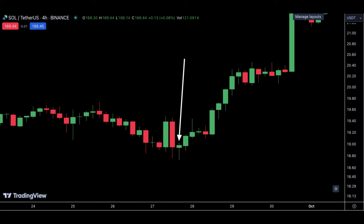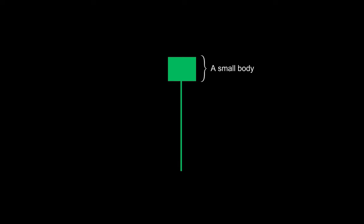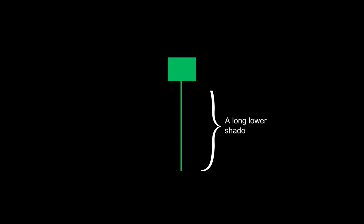The hammer candlestick is a strong reversal pattern that converts a downtrend to an uptrend. It is a candlestick with a small body, a long lower shadow, and little to no upper shadow. The hammer is formed when the price opens, sellers take control and drive the price down, but later buyers take control and drive the price back up to its closing price. Hammer candlesticks with a greater success rate have a small body, a long lower shadow that is at least twice the length of the body, and little to no upper shadow.